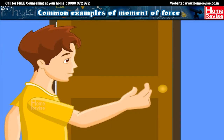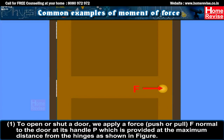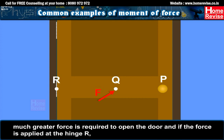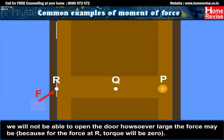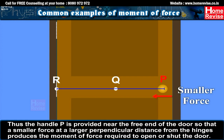Common examples of moment of force. 1. To open or shut a door, we apply a force — push or pull — F, normal to the door at its handle P, which is provided at the maximum distance from the hinges. We can notice that if we apply the force at a point Q near the hinge R, much greater force is required to open the door. And if the force is applied at the hinge R, we will not be able to open the door, howsoever large the force may be, because for the force at R, torque will be zero. Thus, the handle P is provided near the free end of the door so that a smaller force at a larger perpendicular distance from the hinges produces the moment of force required to open or shut the door.